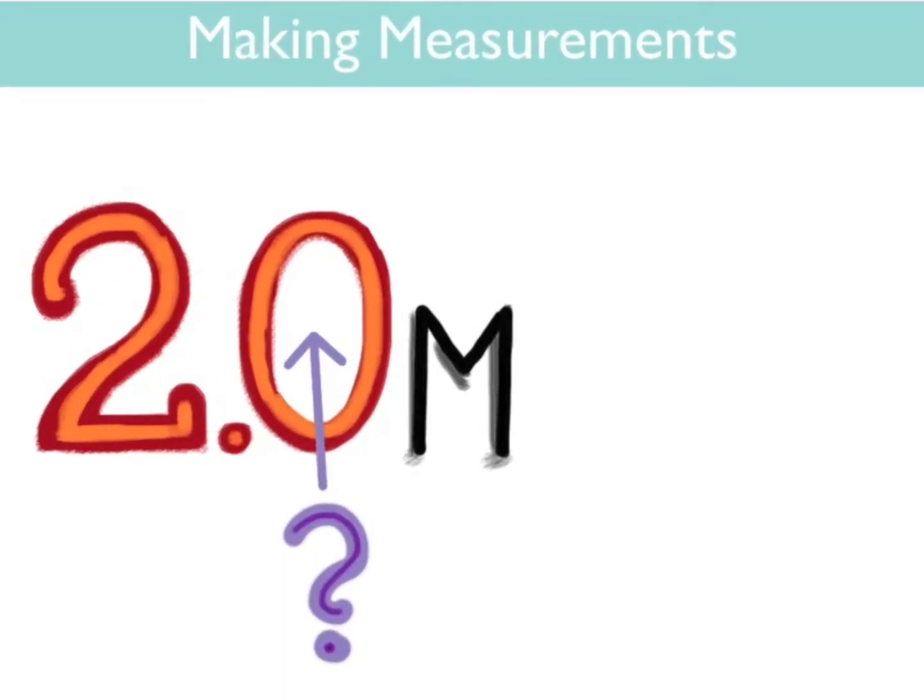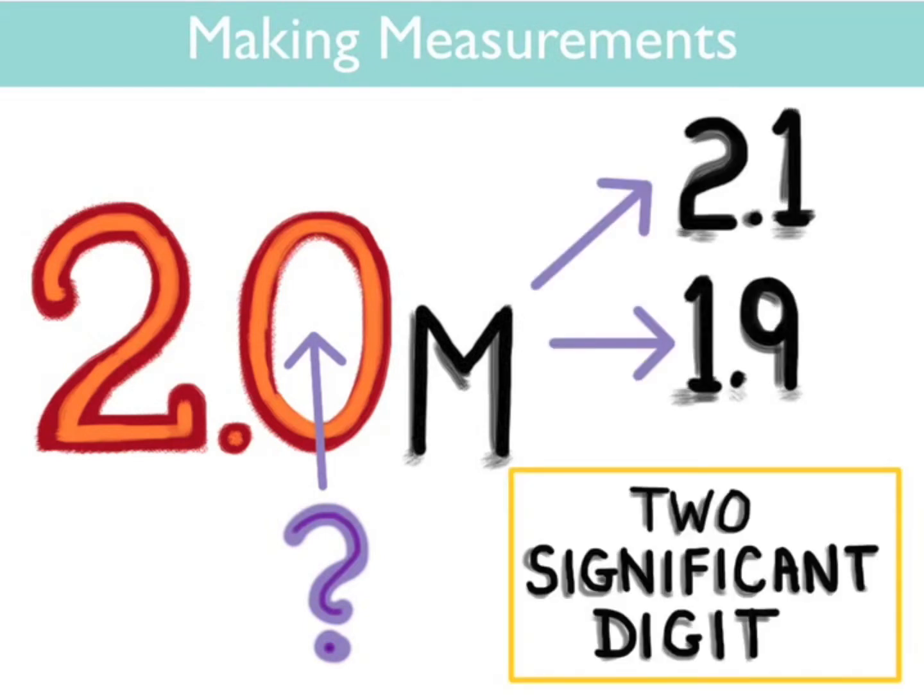Now what if you write 2.0 meters? This means that you're guessing at the tenths place. You are sure about this measurement by about plus or minus 0.1 meters. It's a better measurement, more exact and reliable. It is said to have two significant digits. Notice that the added zero changes the number, like if I said deep red as opposed to just red.